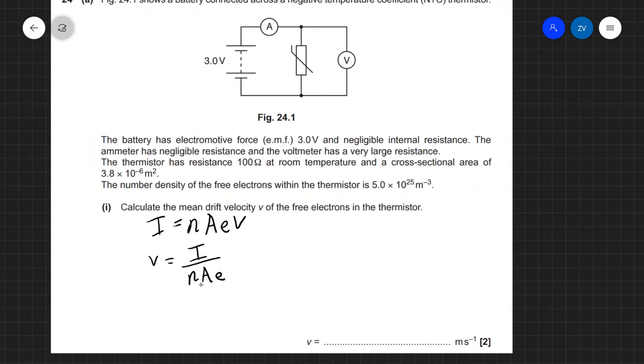We know that the number density for electrons in this case is 5.0 times 10 to the power of 25. We're given the cross-sectional area so we don't need to calculate that which is quite lucky and we also know that e is the elementary charge which we probably remember and it's also given in the formula booklet. Now the first job for us will be to calculate the current and I'm just going to use Ohm's law